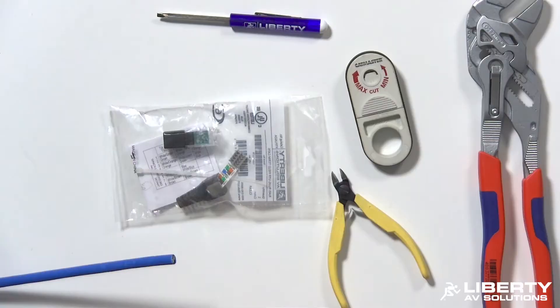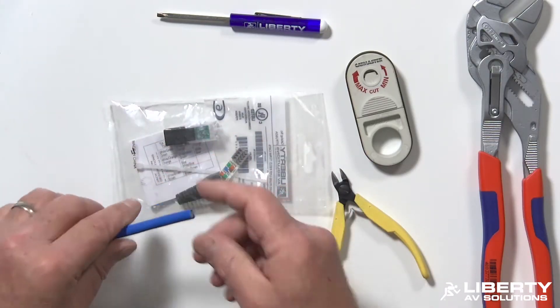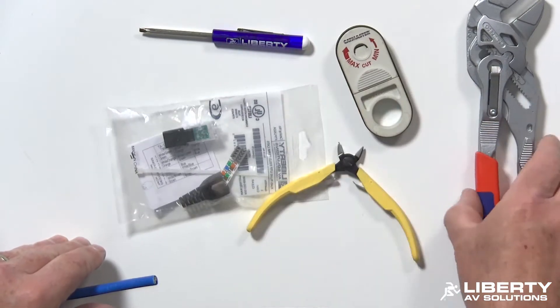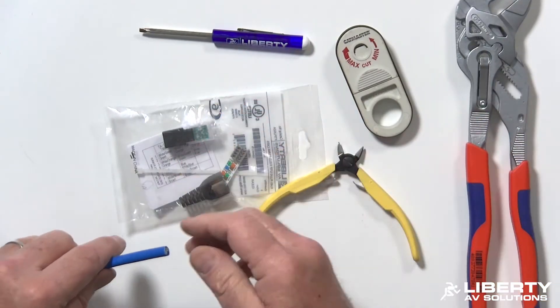First you want to make sure you have the right supplies and parts. You need to have the connector, the cable, a tweaker's handy, a jacket stripper, a pair of diagonal cutters, and a pair of pliers, also handy to help close the connector.